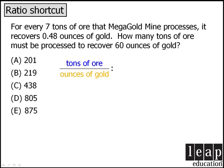Now the question tells us that for every 7 tons of ore processed, we can recover 0.48 ounces of gold. We want to know how many tons of ore must be processed to produce 60 ounces of gold. So we'll set up our equivalent ratio as x tons of ore compared to 60 ounces of gold.